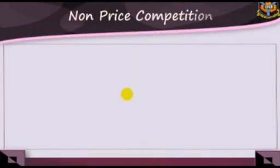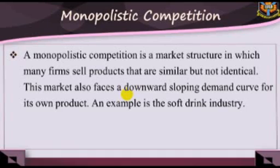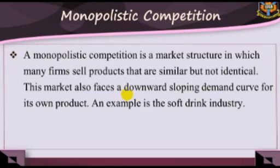Monopolistic competition is based mainly on four key assumptions. One, each firm produces one specific variety or brand of the industry's differentiated products. Two, the industry contains so many firms that each one ignores the possible reaction of its competitors when it makes its own price and output decisions. Three, there is freedom of entry and exit in the industry. Four, there is symmetry — a new entrant into the market takes sales in equal proportion from all existing firms.